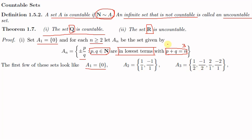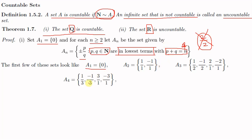For A₄, p + q = 4. Starting with 1+3 gives 1/3 and −1/3. The pair 2+2 is excluded because 2/2 is not in lowest terms (common factor 2). Then 3+1 gives 3/1 and −3/1. So A₄ = {1/3, −1/3, 3/1, −3/1}.